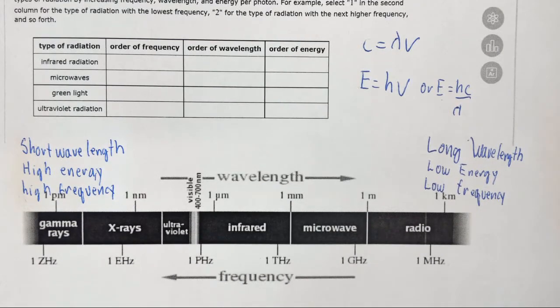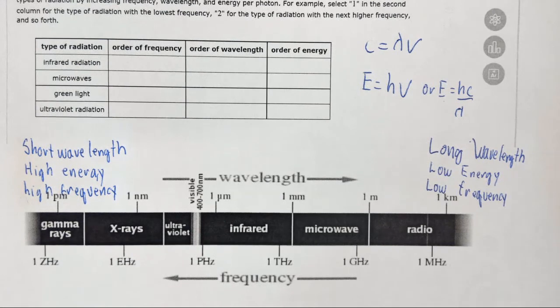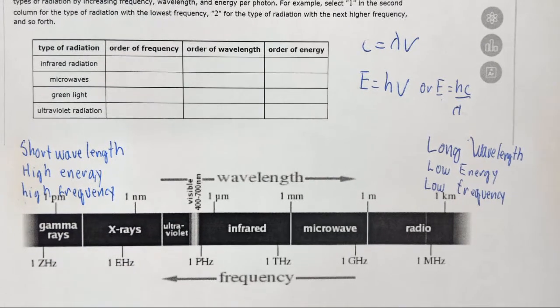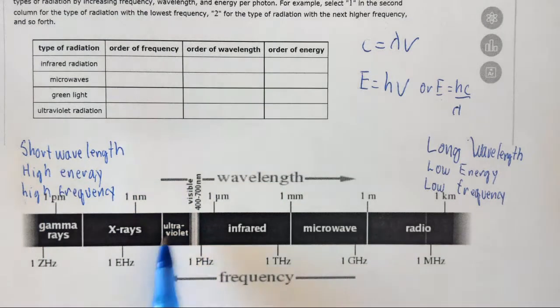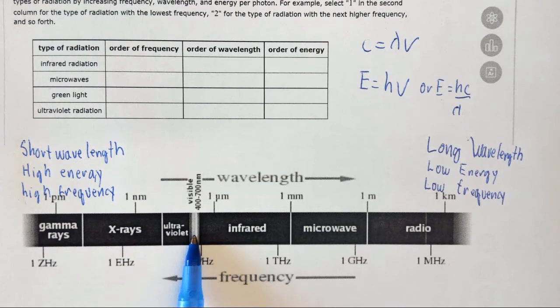Okay, so when we look at these things we want to do order of frequency. So we want to find the lowest frequency electromagnetic radiation. So we want to find the one that's furthest to this side. So first we have infrared, which is here, then microwaves, which is certainly lower in frequency than infrared, then green light, which is a type of visible light, and then ultraviolet radiation, which is actually higher in energy and higher in frequency than visible light.